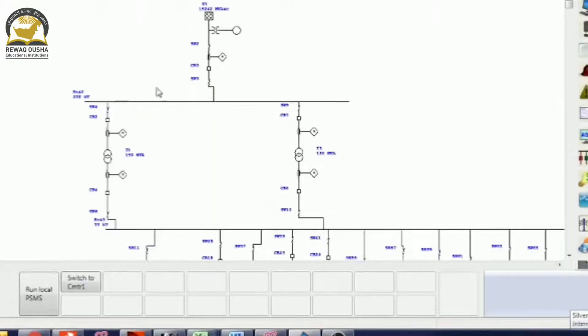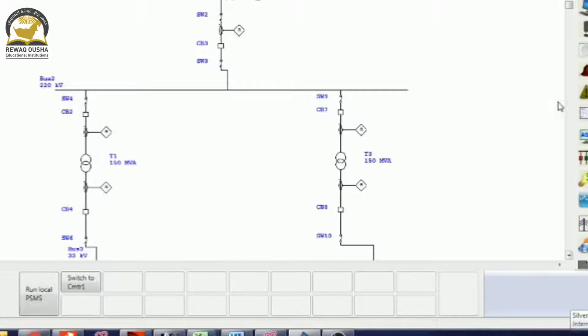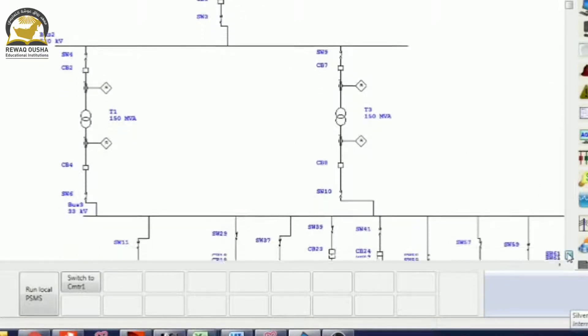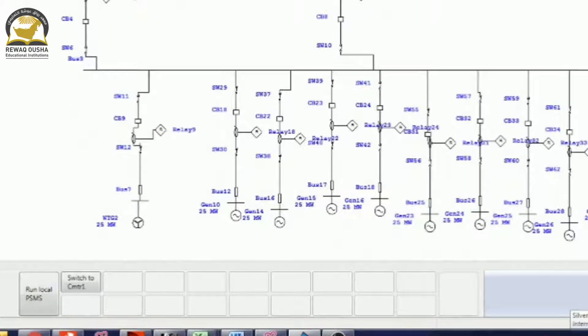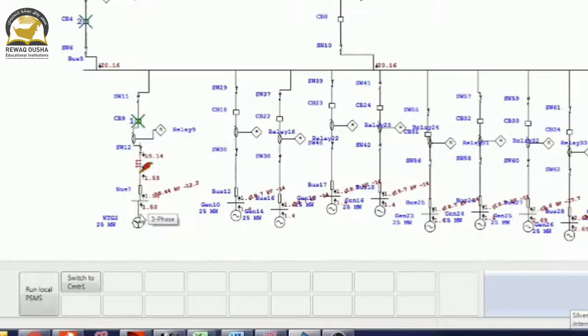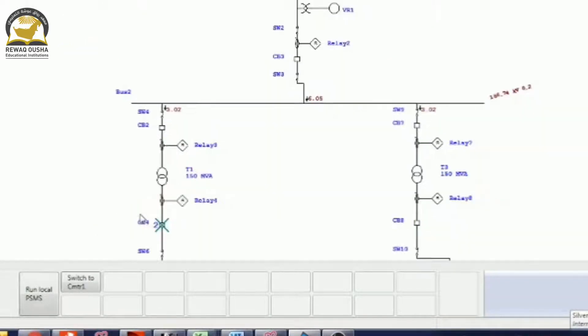We have this 220 by 33 kilovolt surface station single line diagram, and when we insert any fault here, the amount of fault current, circuit breaker tripping sequence, and relay coordinations can all be analyzed.